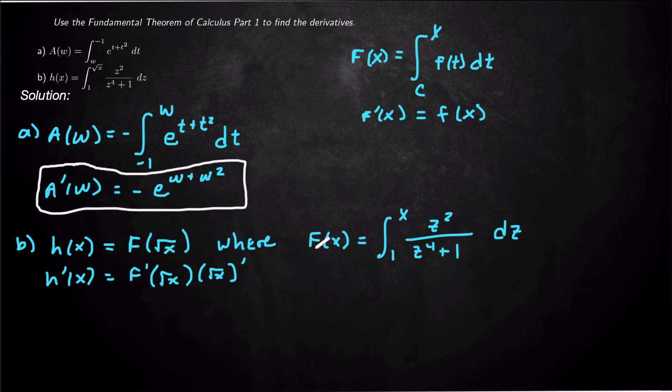Well we already know what F prime will be. Basically just take this function inside here, z squared over z to the 4 plus 1, plug in square root of x to that, and then multiply by the derivative.